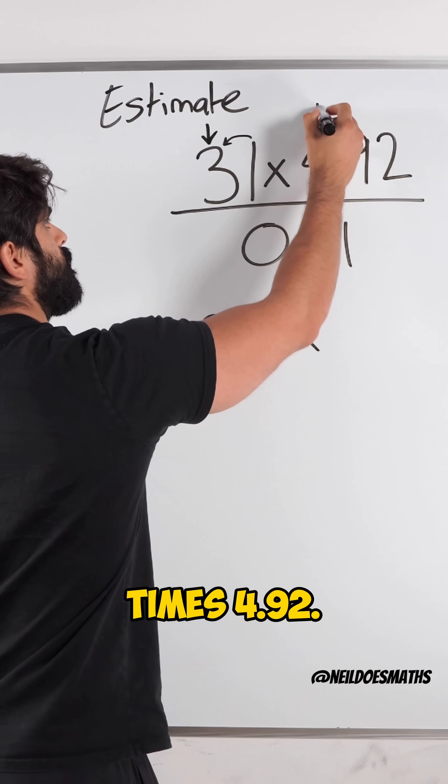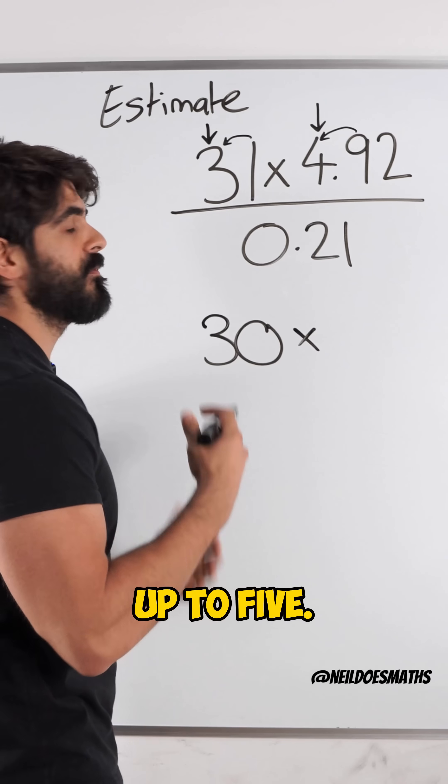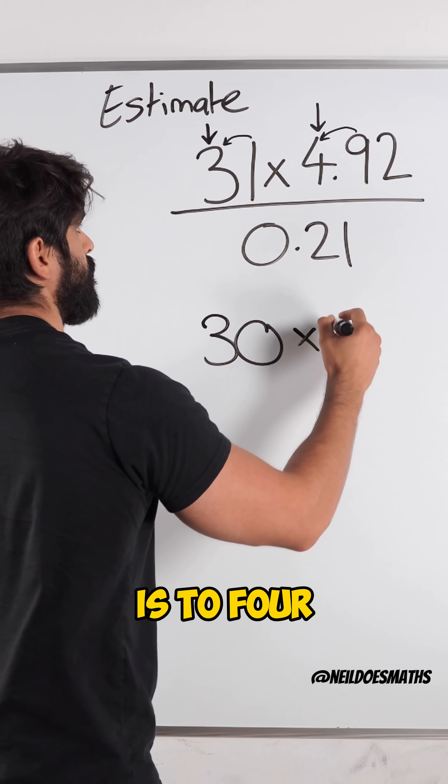Times 4.92, 4 is the most significant number, and 9 rounds it up to 5. 4.92 is closer to 5 than it is to 4.